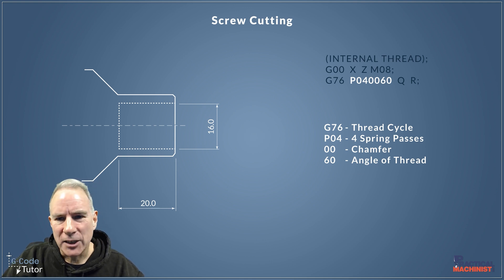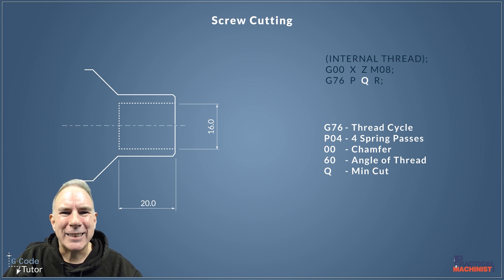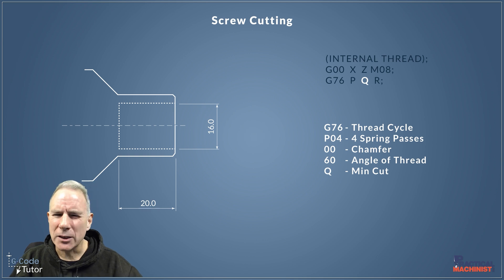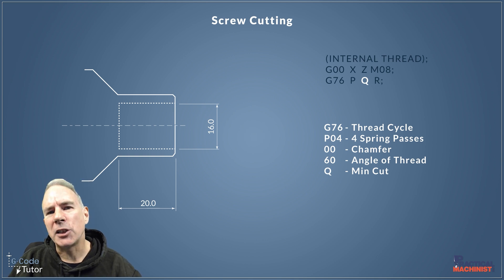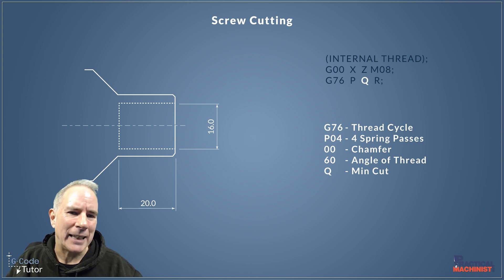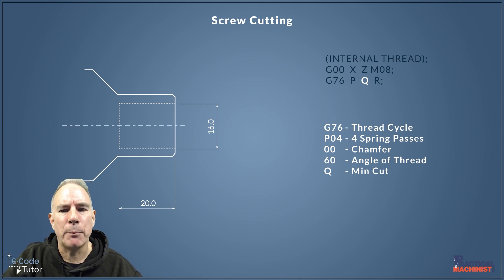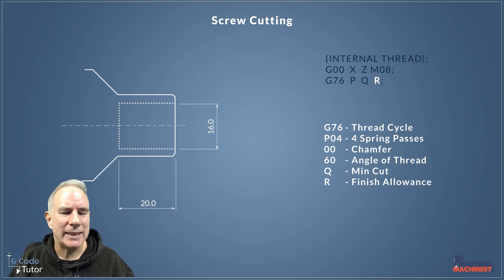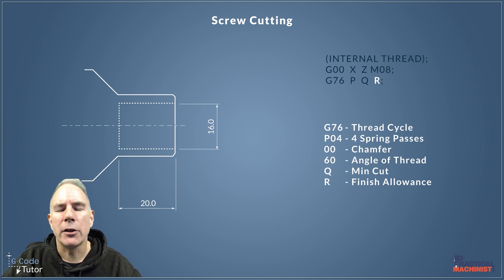The Q word is our minimum cut, specified in microns — so instead of putting 0.1 we would put 100. As the machine takes deeper cuts when threading, it removes progressively more material due to the surface area of the teeth. So it's good practice to reduce the size of the cut as we go deeper, and this Q value sets the smallest cut the machine will take. The R value is our finishing allowance — how much we leave on for finishing — and this is not in microns, so we would put 0.1 for 0.1 of a millimeter.